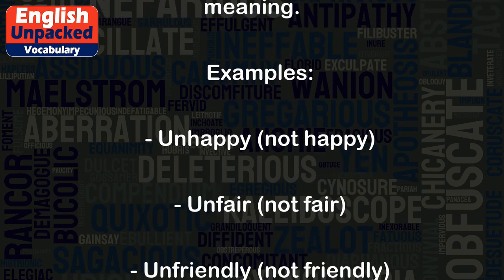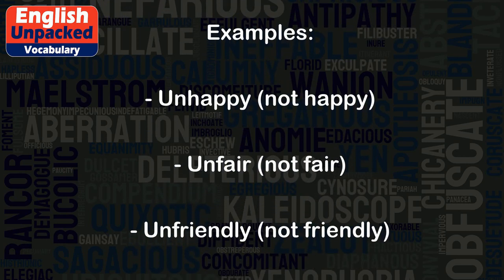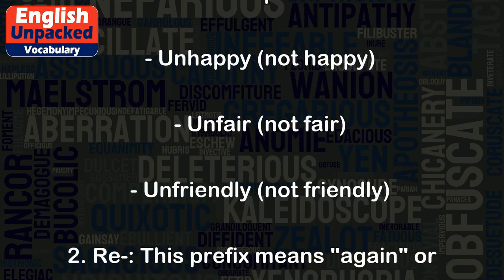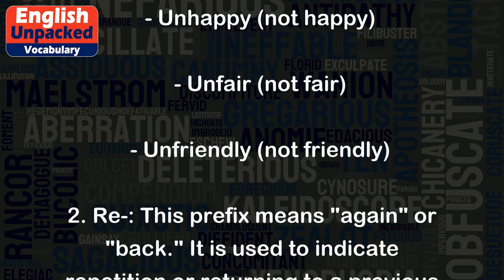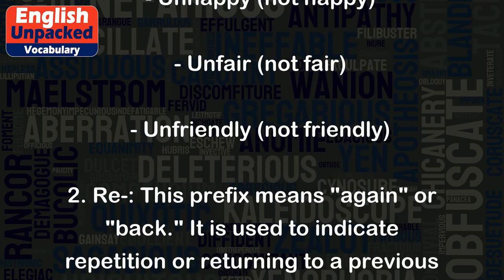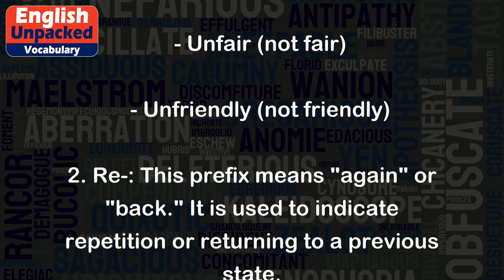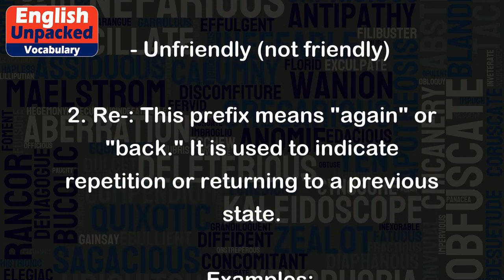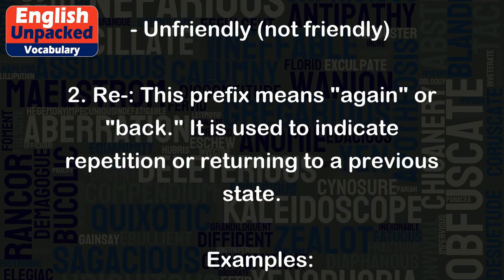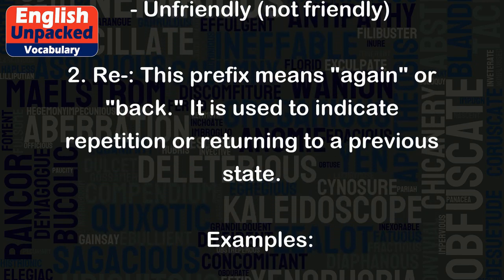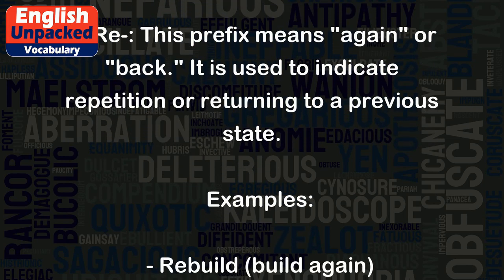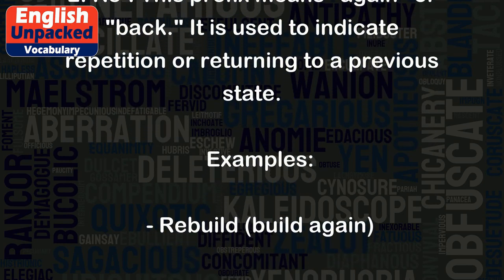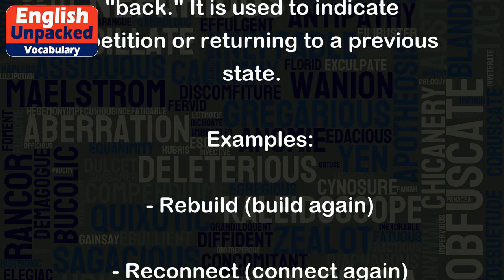Examples: Unhappy — not happy. Unfair — not fair. Unfriendly — not friendly. 2. Re. This prefix means again, or back. It is used to indicate repetition or returning to a previous state.